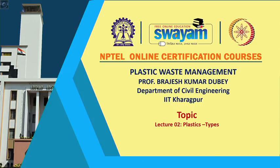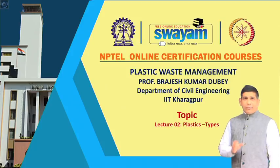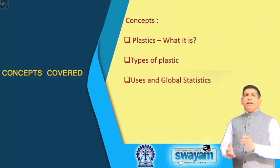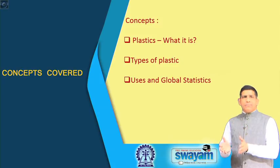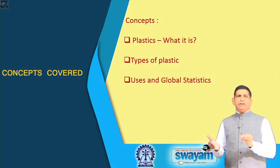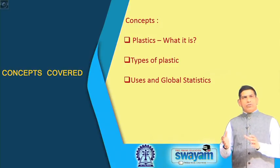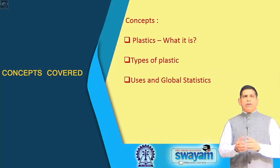Hello and welcome to the second module of week 1. We will continue our discussion from the first module, where we talked about what is plastic. Today we will look at the different types of plastics based on the different additives in there, different types of usage, and all that. In the entire week we will look at what is plastic, types of plastic, and in this particular video we will focus on types of plastic and probably continue the discussion in the next module as well. The last two modules will focus mostly on usage and global statistics — how much plastic is really made at a global scale and in the Indian scale.